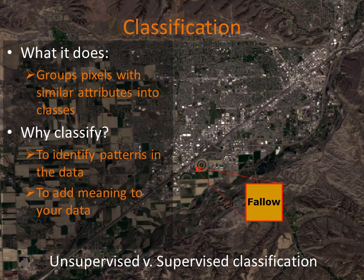In classifying the pixel as fallow, we have essentially converted the digital number associated with it into a more meaningful category of data. We've gone from numbers to a qualitative description. In what follows, we'll compare and contrast unsupervised and supervised approaches to doing this sort of translation or classification work.